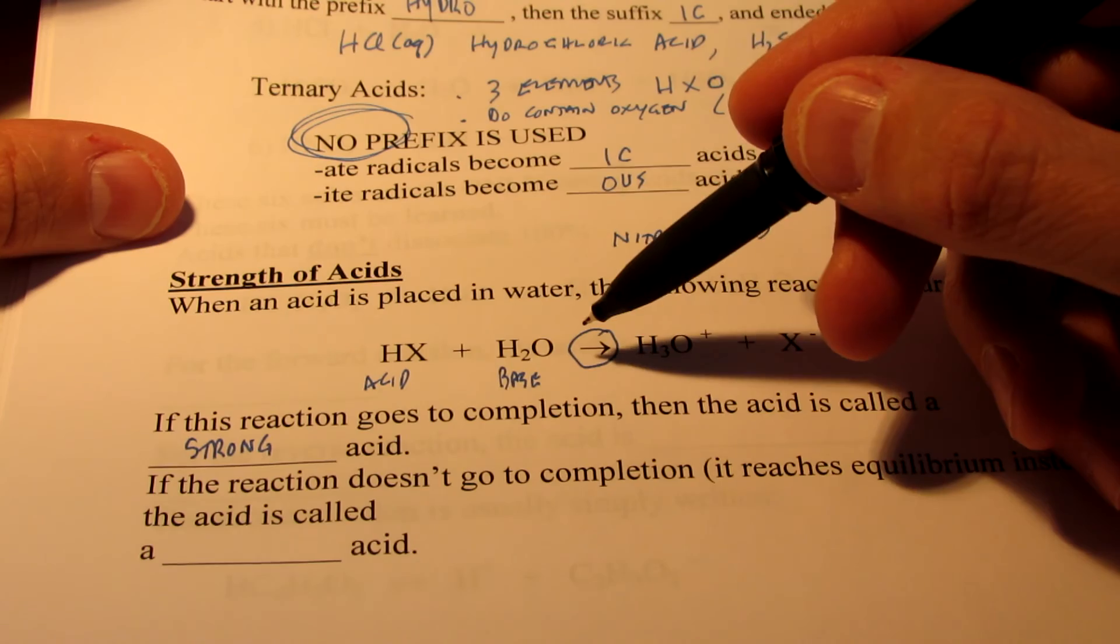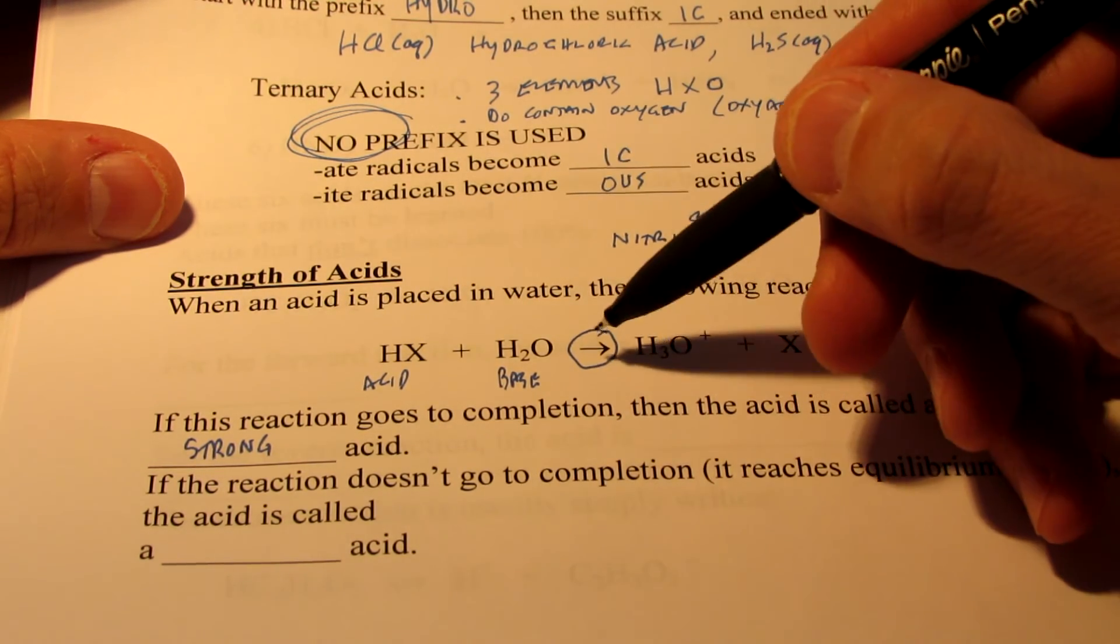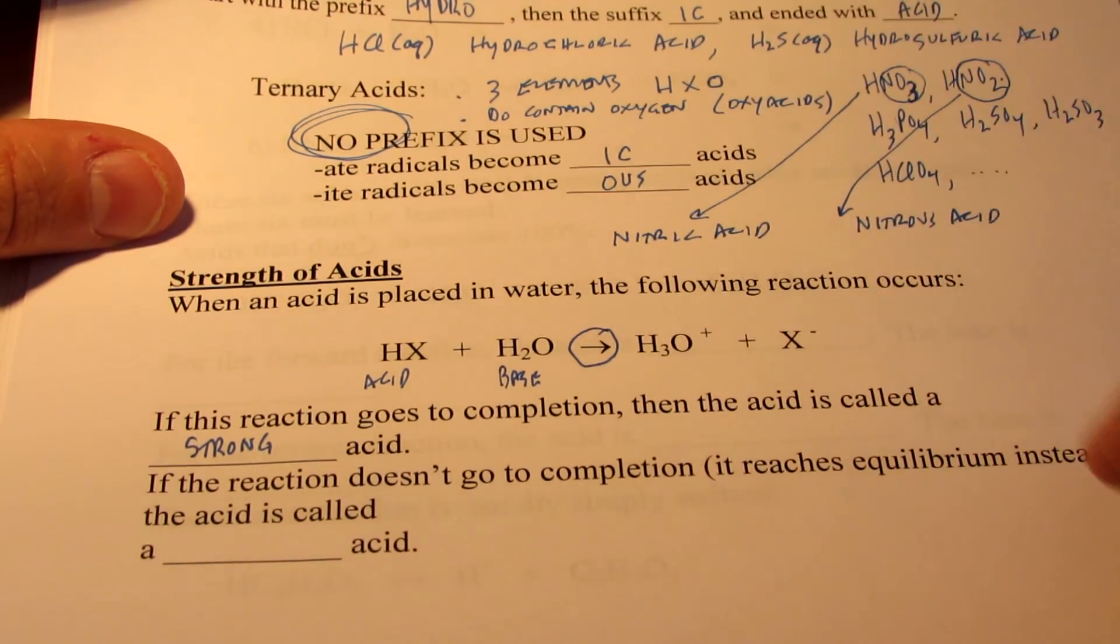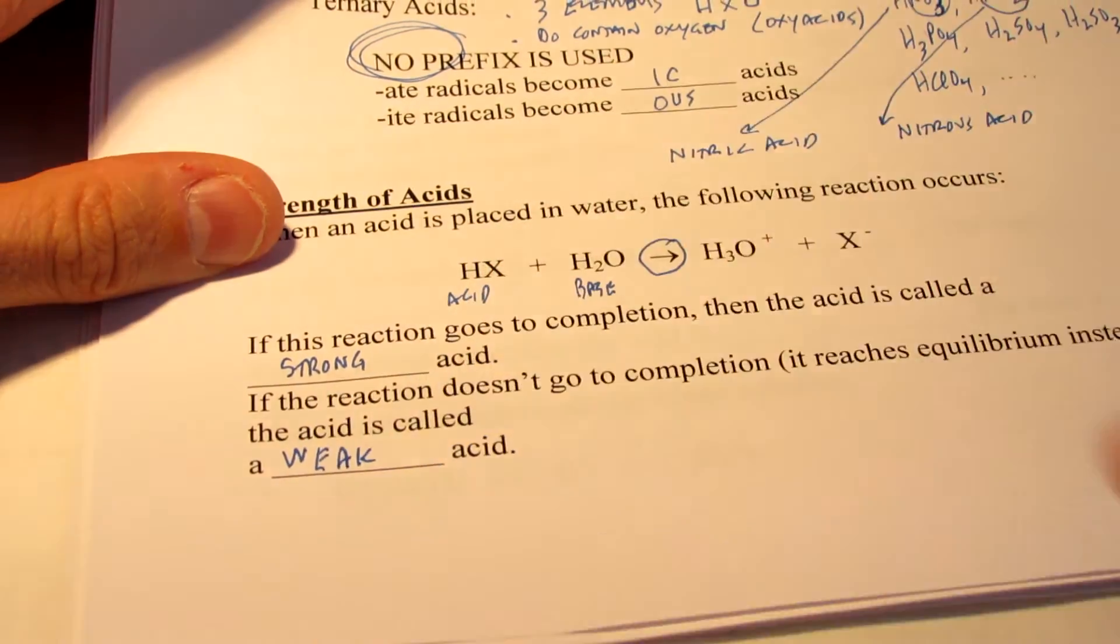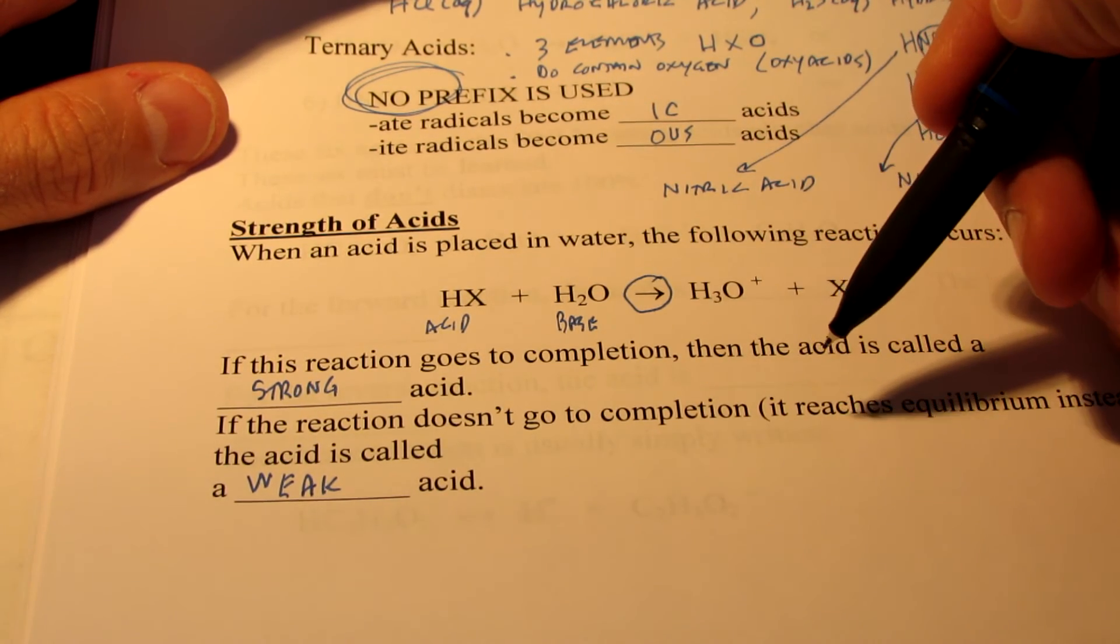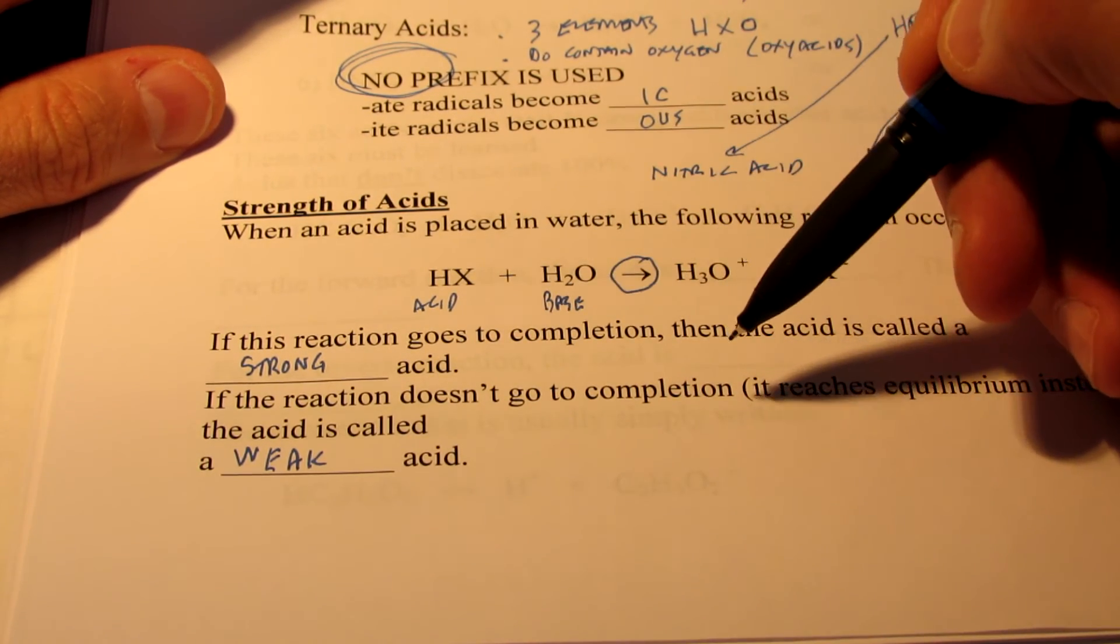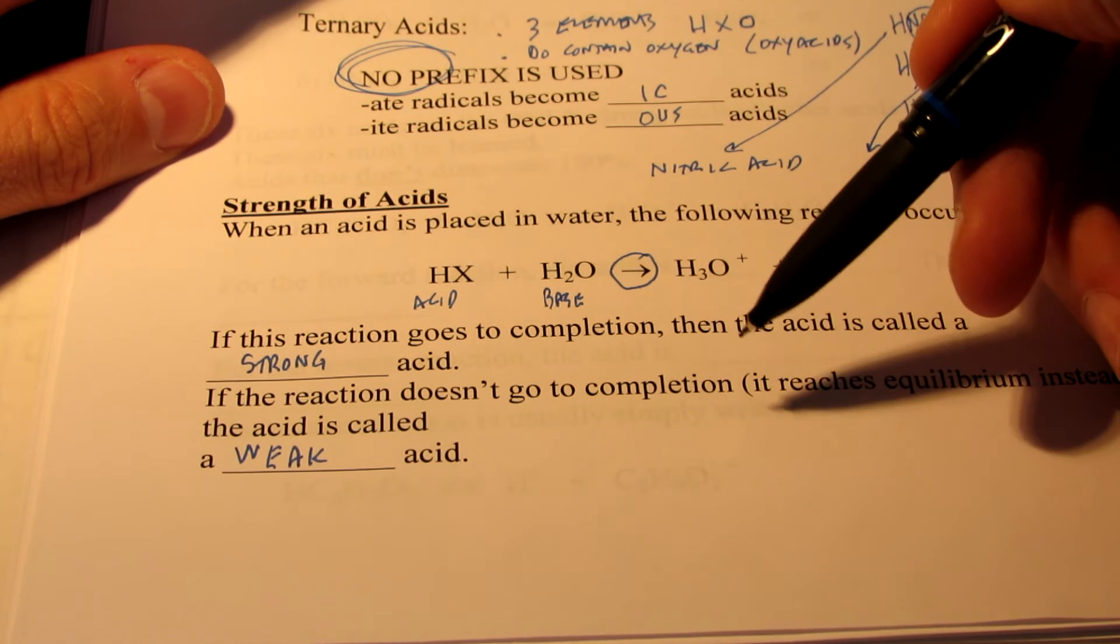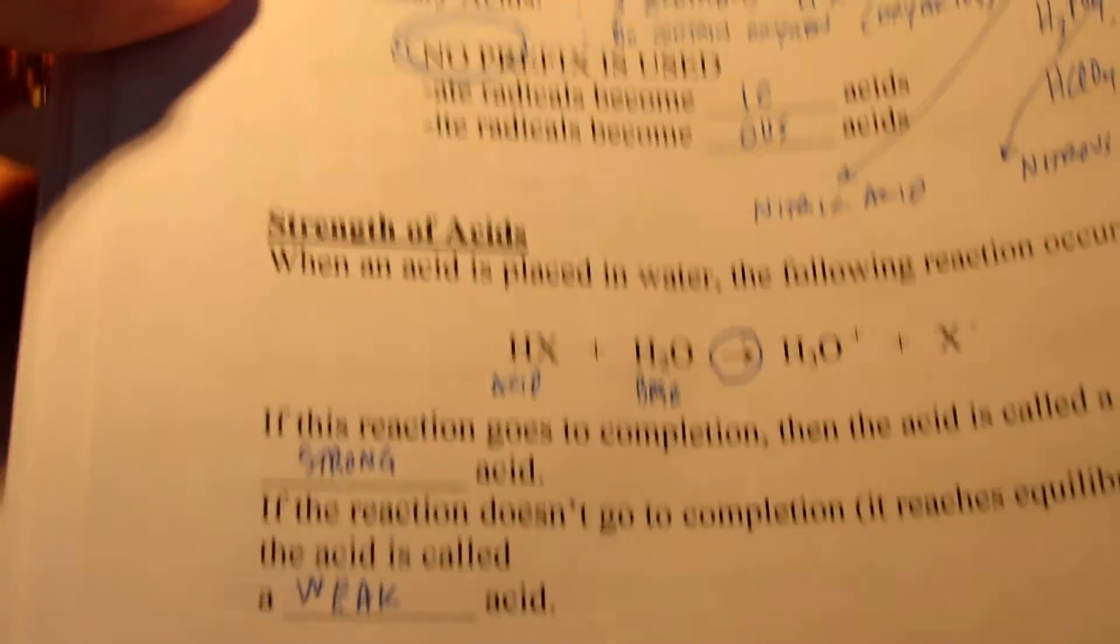Acids that do this 100% of the time or very close to 100% of the time are called strong. Now think about this. That implies that there are some acids that don't lose their proton very easily. The arrow doesn't go just one way. We'll see an arrow going back the other way. And of course, those would be called weak acids. So strong acids will lose their proton to water about 100% of the time. And weak acids, they're not going to lose it all the time. In fact, some of them are very weak and they rarely lose their proton to water. But nevertheless, if they do on occasion, they are still considered to be acids and they would be considered weak acids.